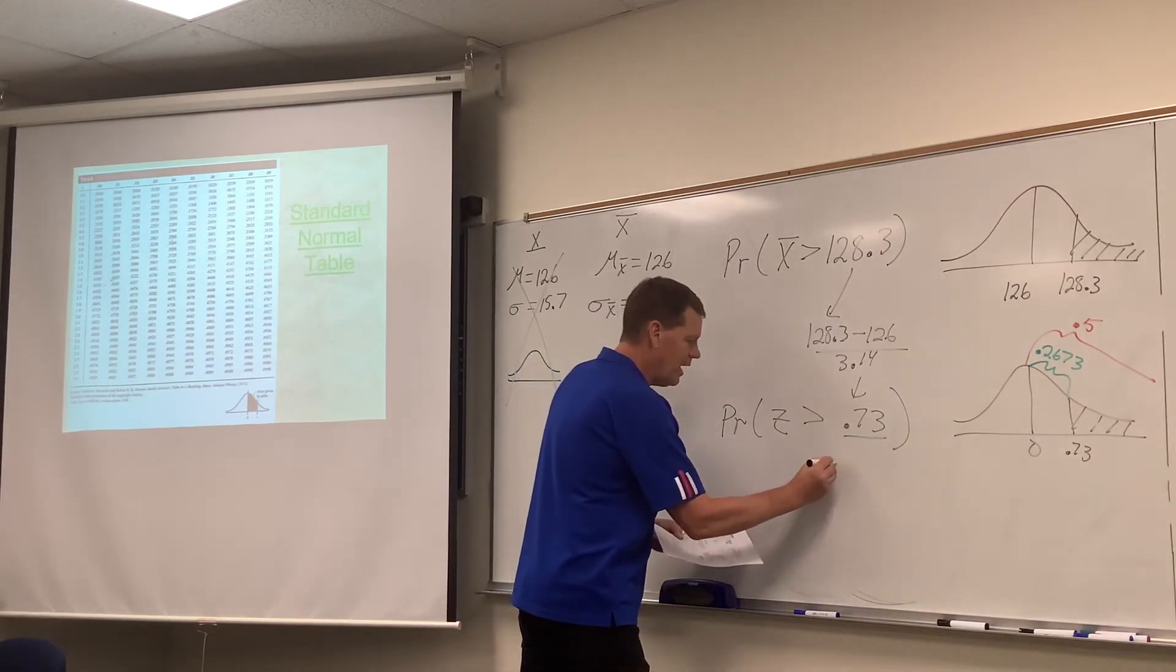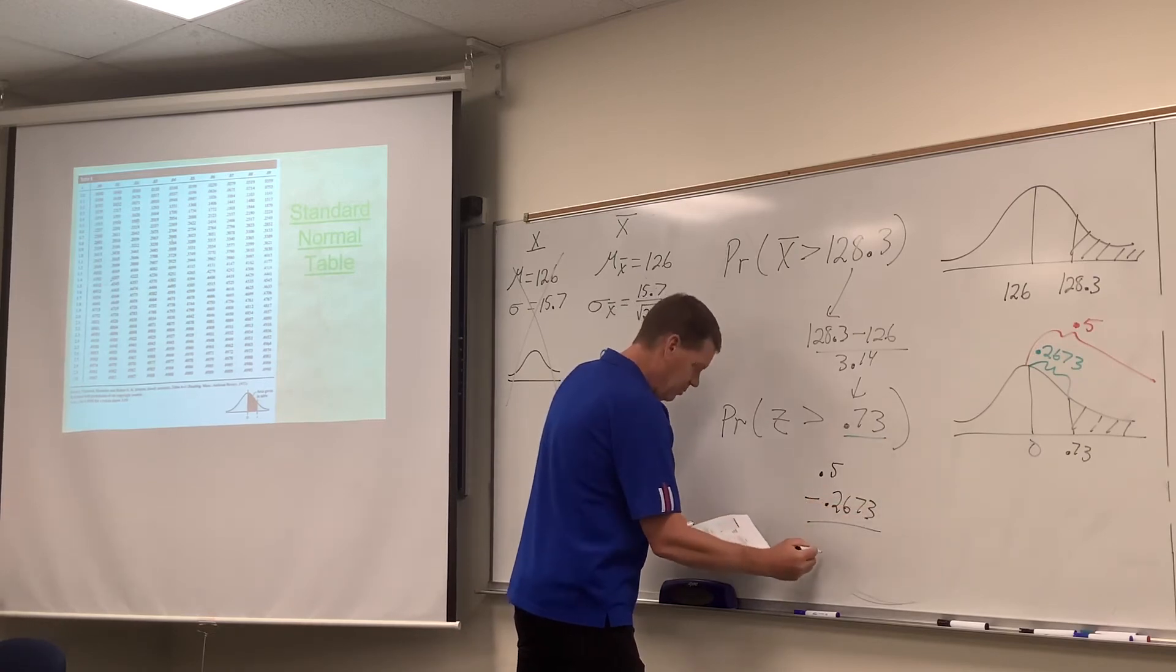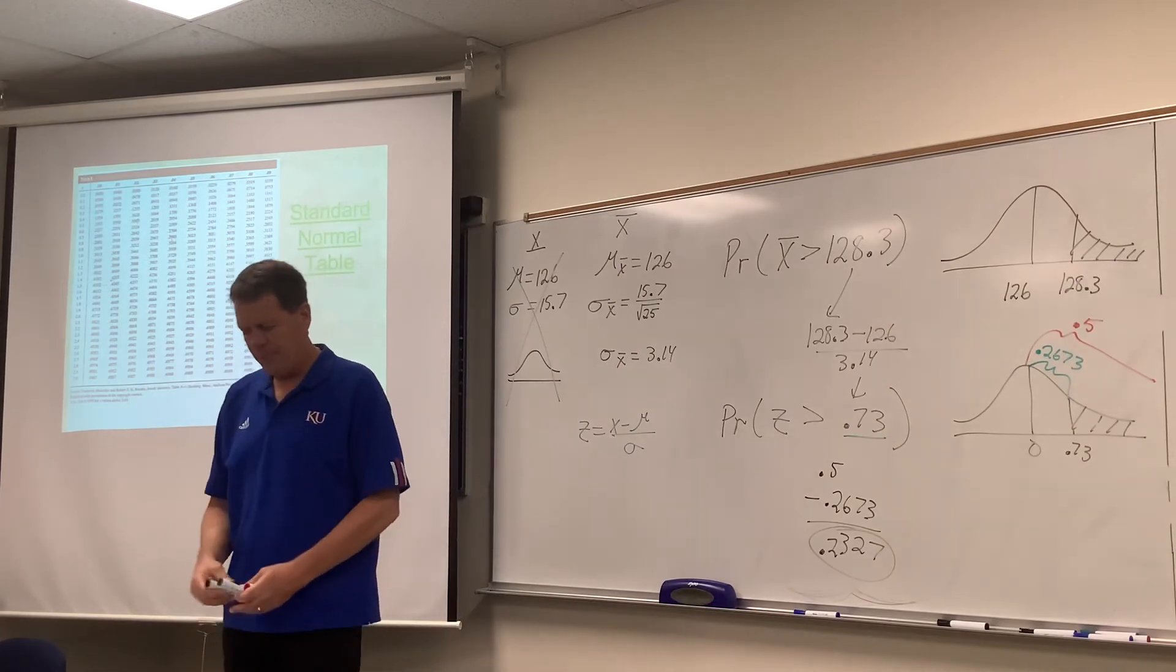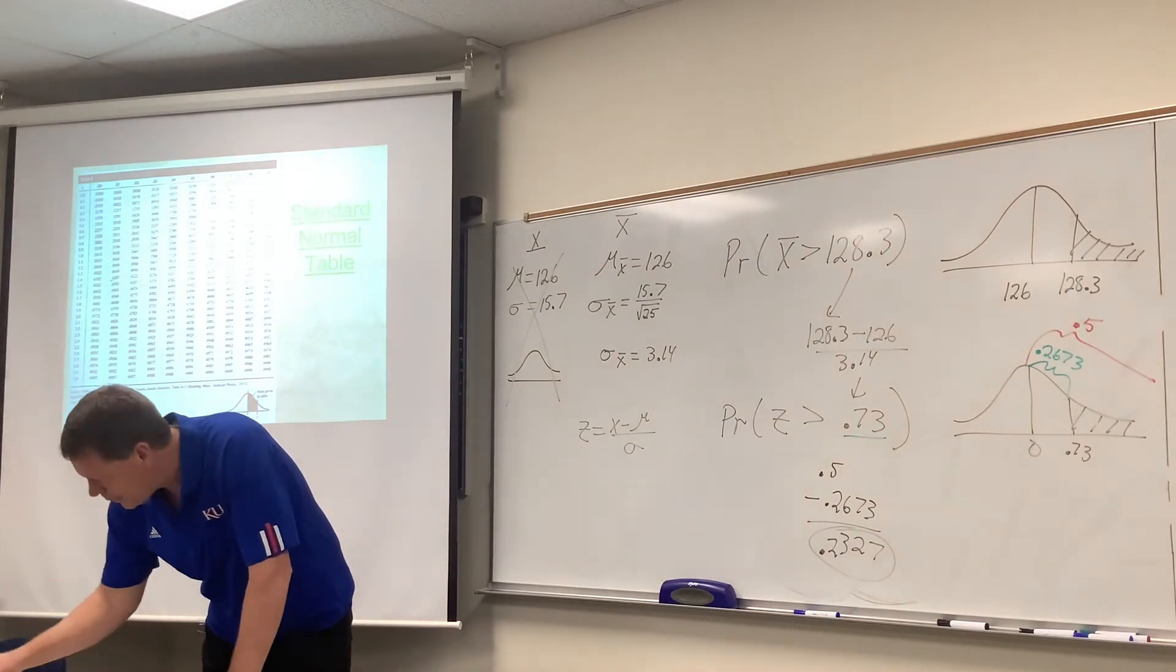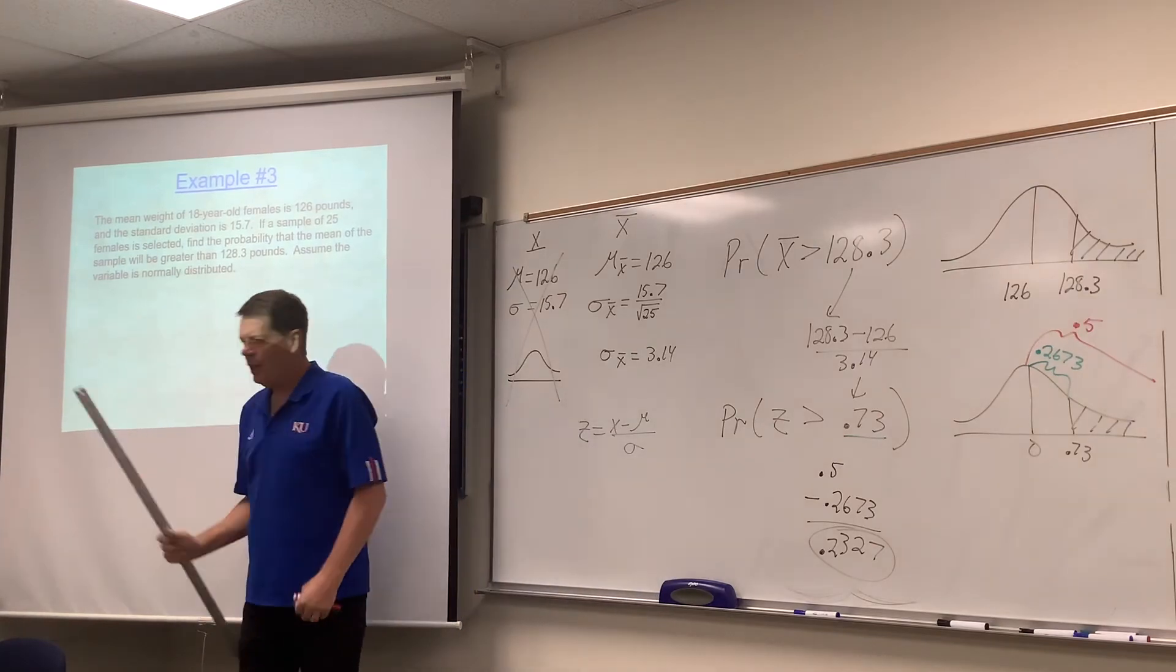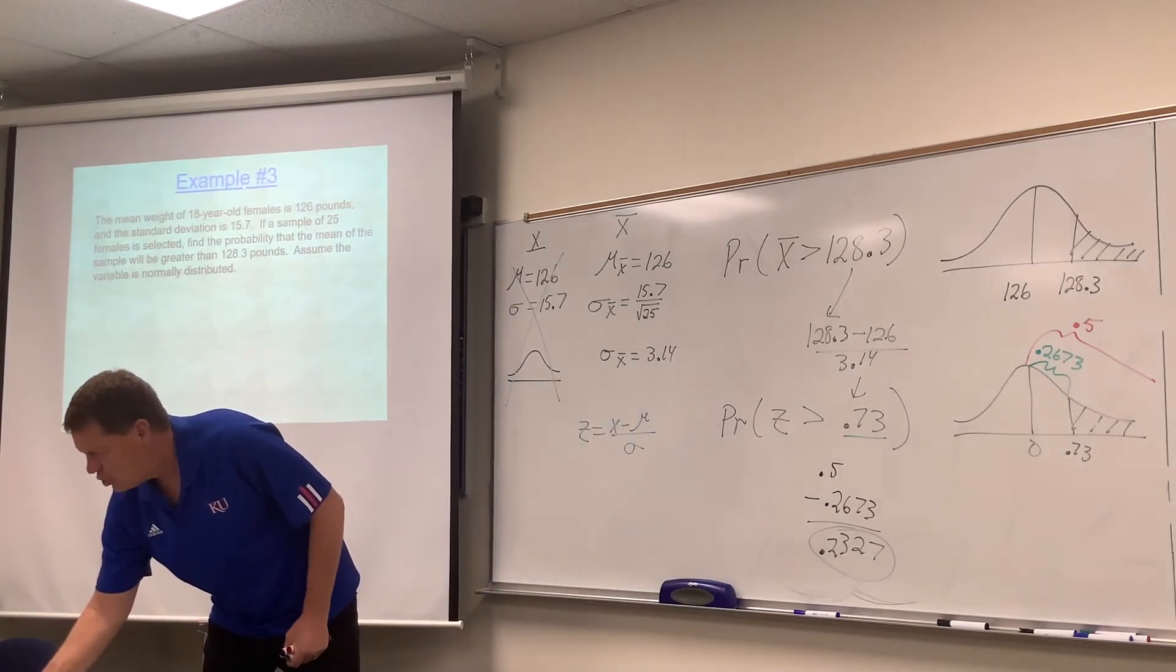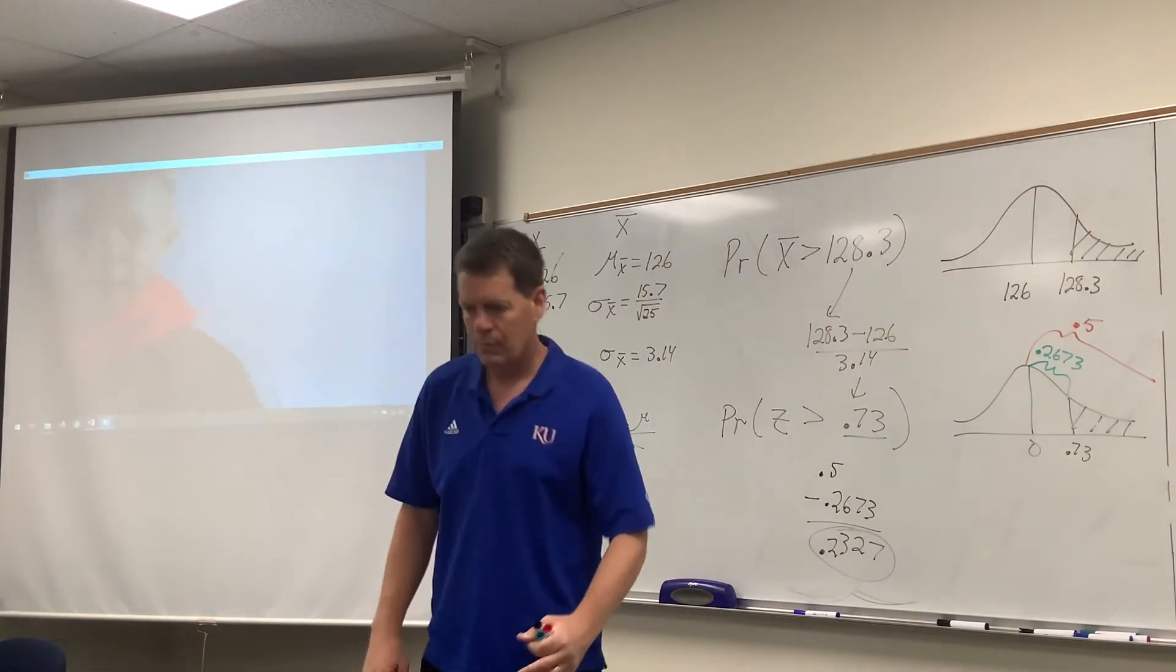So this would be 0.5 minus 0.2673, and that comes out to be 0.2327. So this is all old stuff that we did before, and that's why I'm going through that part of the question pretty quickly. That would be that probability there. And again, the key thing would be we're finding a probability related to the mean of a sample, and that was our motivation to jump over to x-bar and apply the central limit theorem, the fact that we jumped.